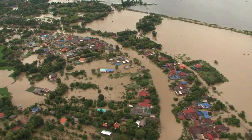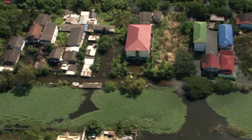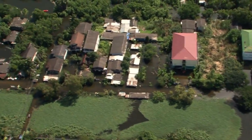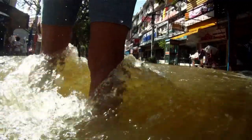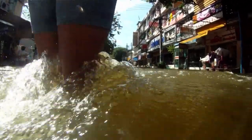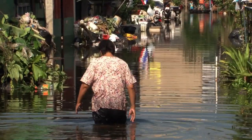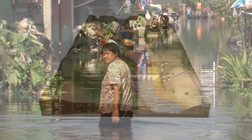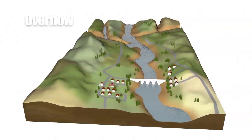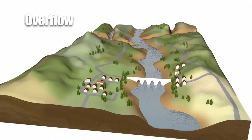Floods can form after heavy rain over a long period or when a large snowfall melts. There are many different types of flooding which fall under three main categories.